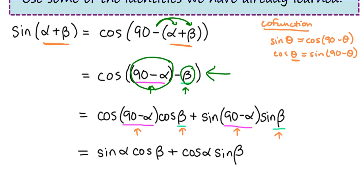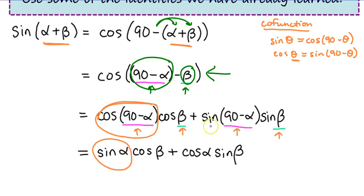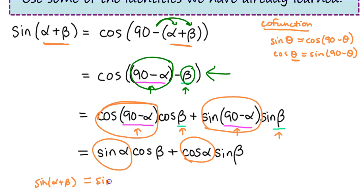Now once again, using the co-function identities, we have cosine of 90 minus an angle equals the sine of the angle, so those are equal. So at this point we've done as much as we can to simplify this. So we have sine of alpha plus beta equals sine alpha cosine beta plus cosine alpha sine beta.